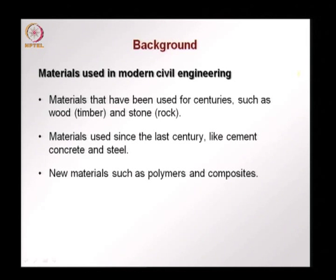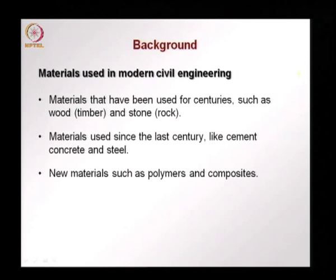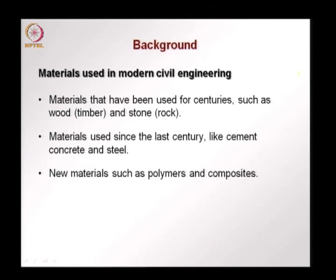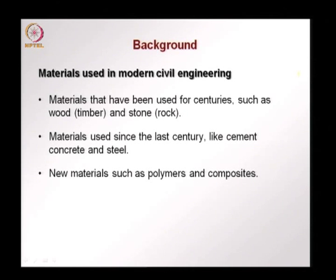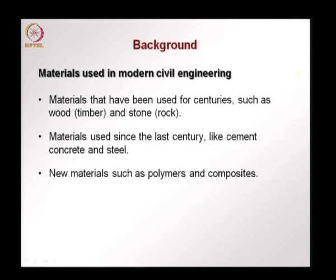What are the materials that we use in civil engineering? They are not many. We can look at materials used for many centuries like wood and stone — probably the first materials human beings used when constructing something. Over the last century we have had cement concrete and steel, still used a lot. New materials — polymers or polymer-based composites, meaning different phases combined to give a composite, usually fiber reinforced polymers — are also used a lot in modern civil engineering.